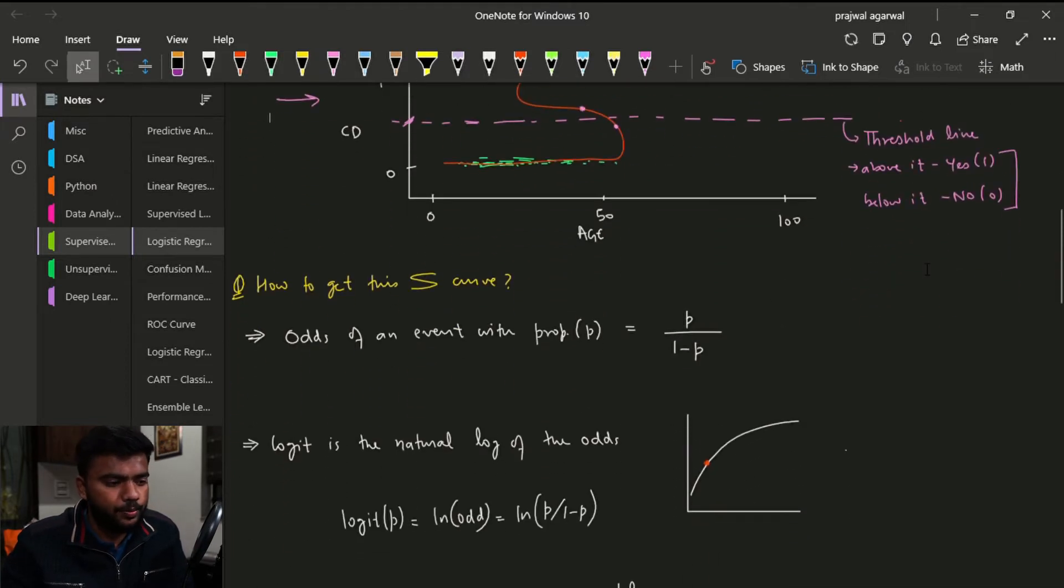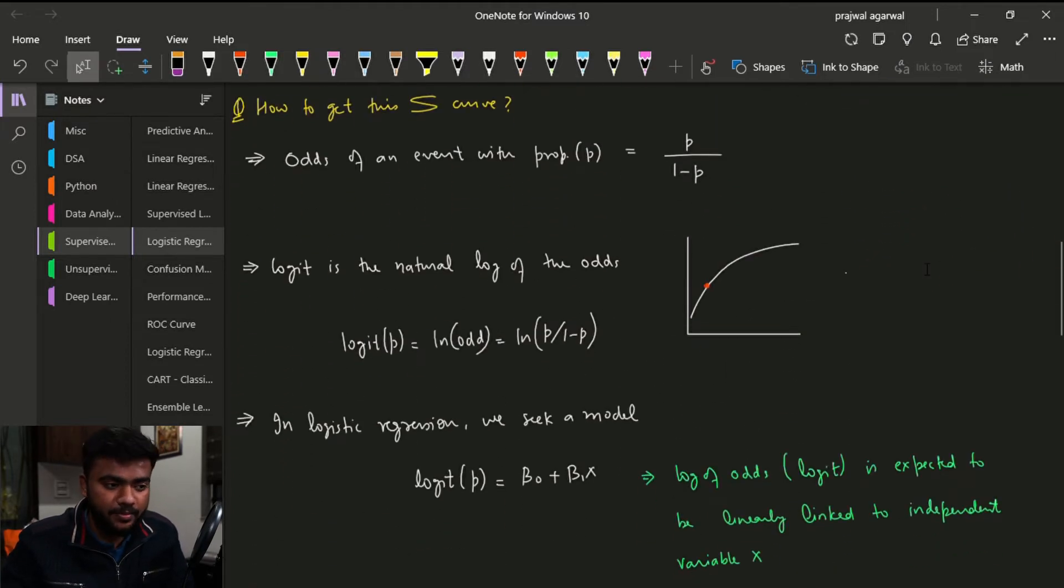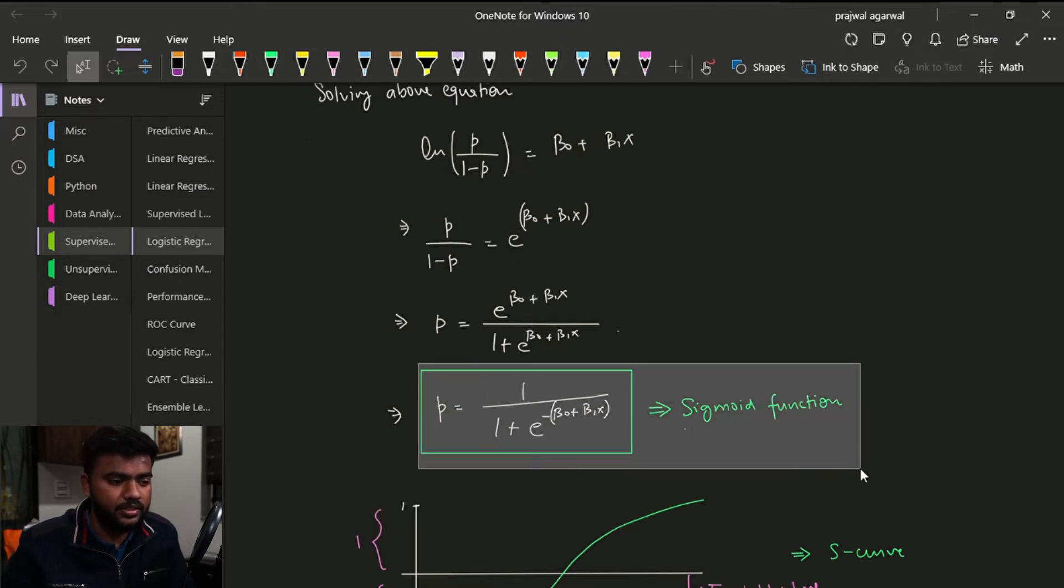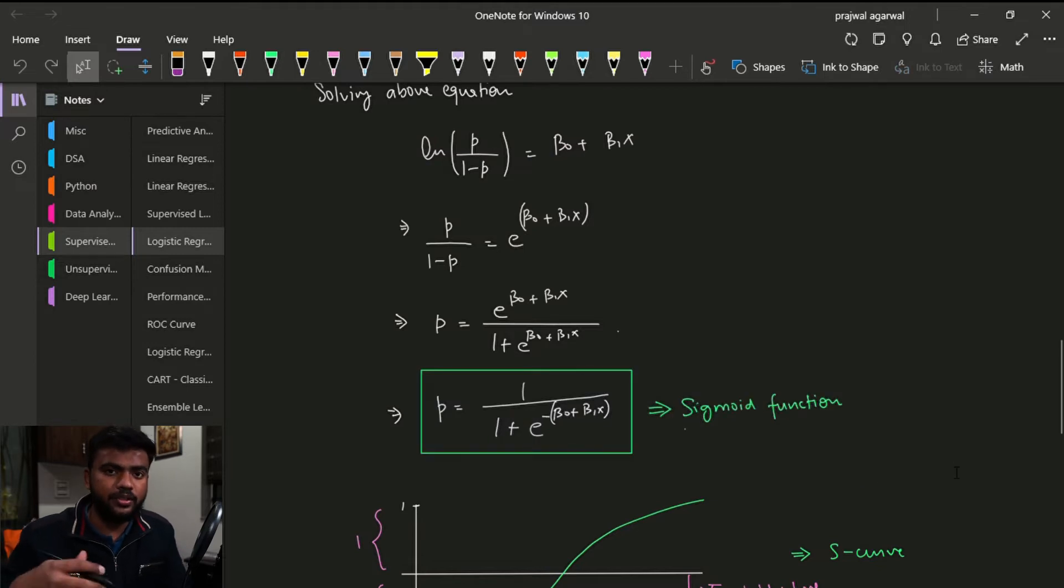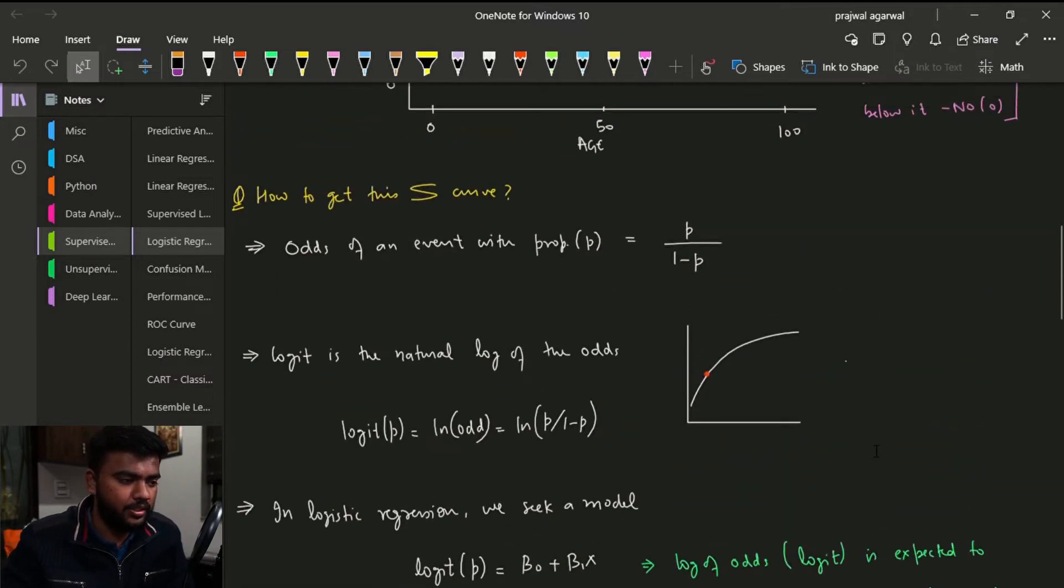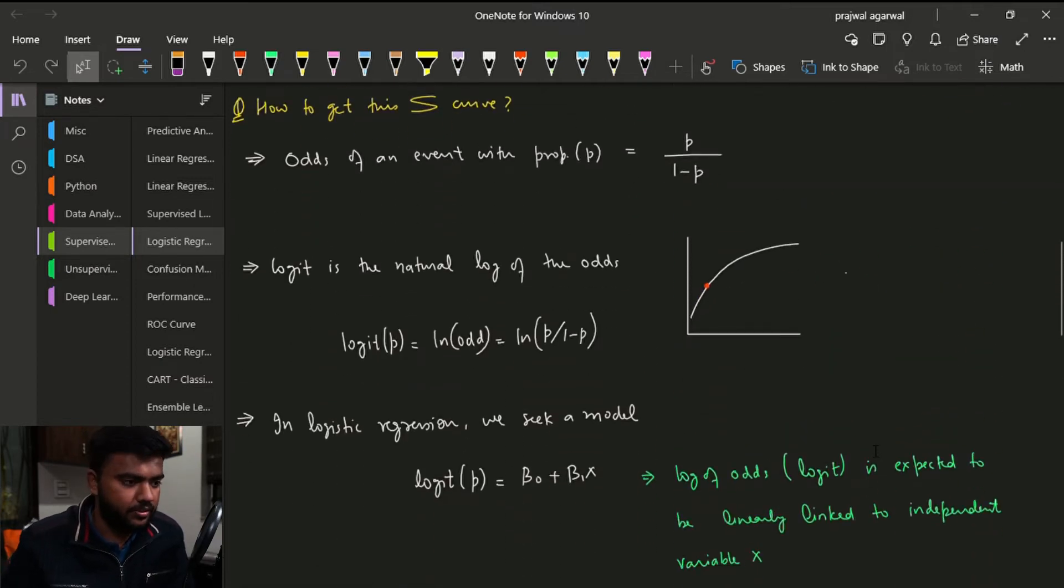Now the process of getting this S curve is very mathematical, and the good thing about this method is that you don't have to know it. The only thing that is actually important for you is to know the result, which is this equation, because this is the equation that we will be using throughout the course whenever we are requiring logistic regression. But still we will go through the mathematics just for the sake of it.